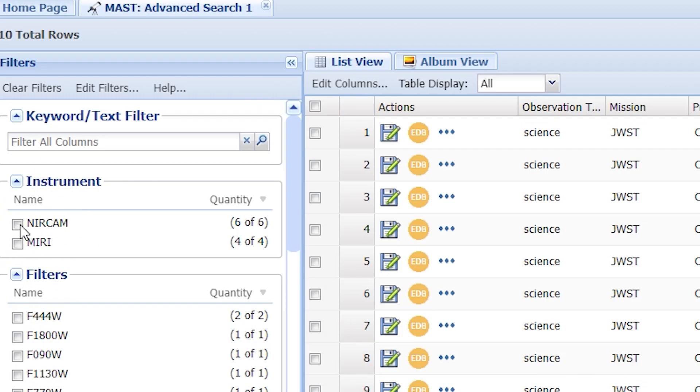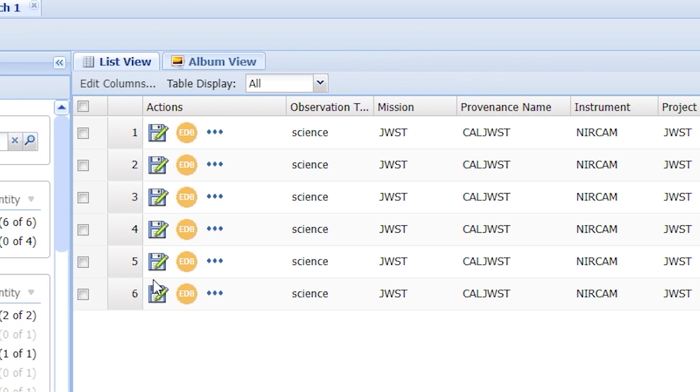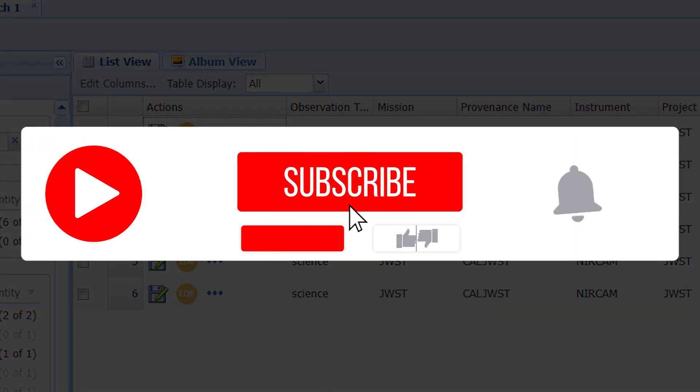On the left, you can see the Instruments section, and you can check one or all of them. Finally, you can click the floppy disk icon on the left of each row to download the data. From here on, you need the correct software to open the FITS files.